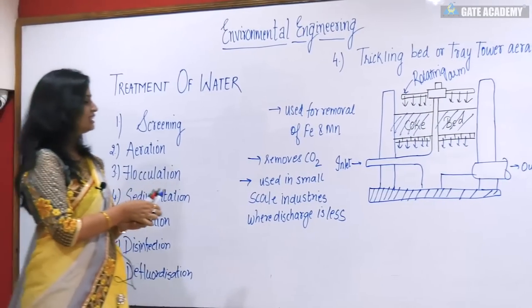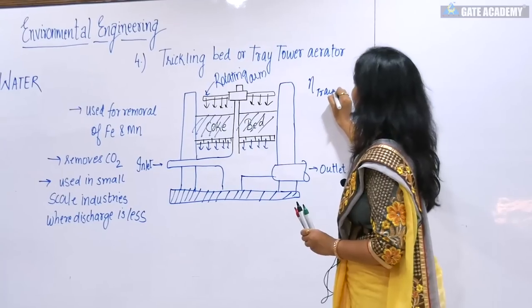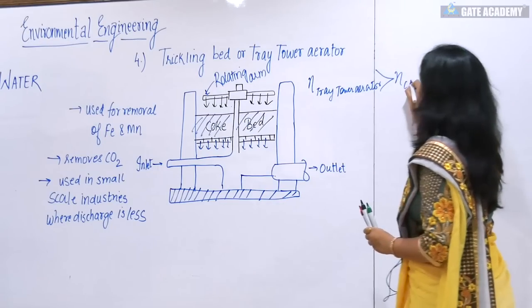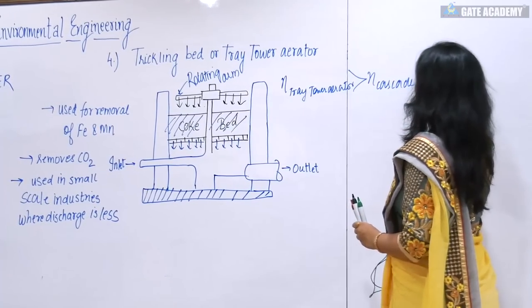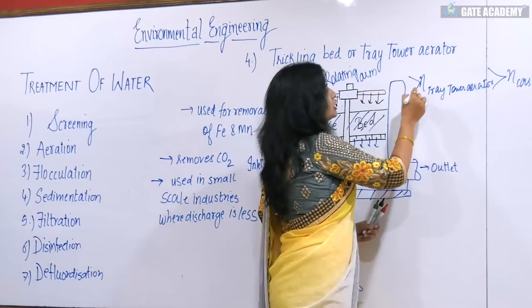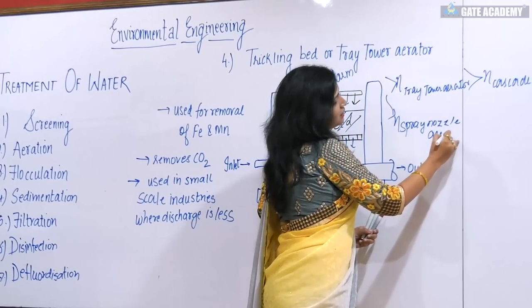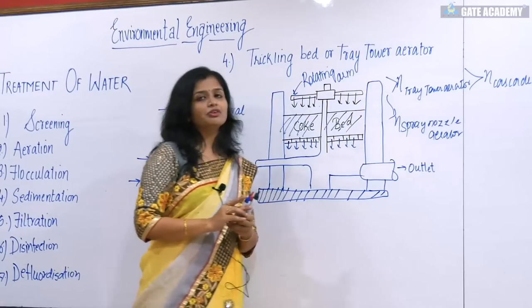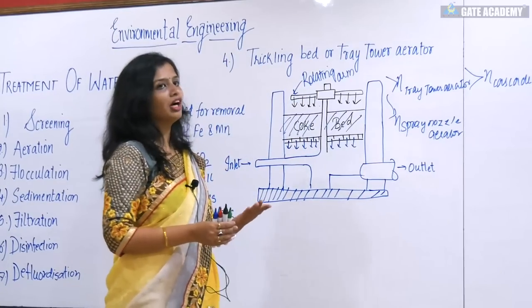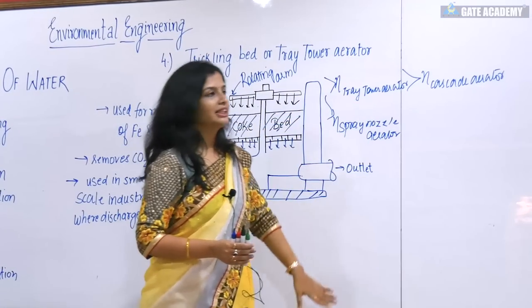As far as efficiency is concerned, the efficiency of this trickling tray tower aerator is greater than the efficiency of the cascade aerator, however its efficiency is less compared to the spray nozzle aerator. The ideal aerator is the spray nozzle, but from an economic point of view we use the cascade aerator. For small scale industries where discharge is less, we can use the spray tower aerator as its efficiency is greater than the cascade aerator.